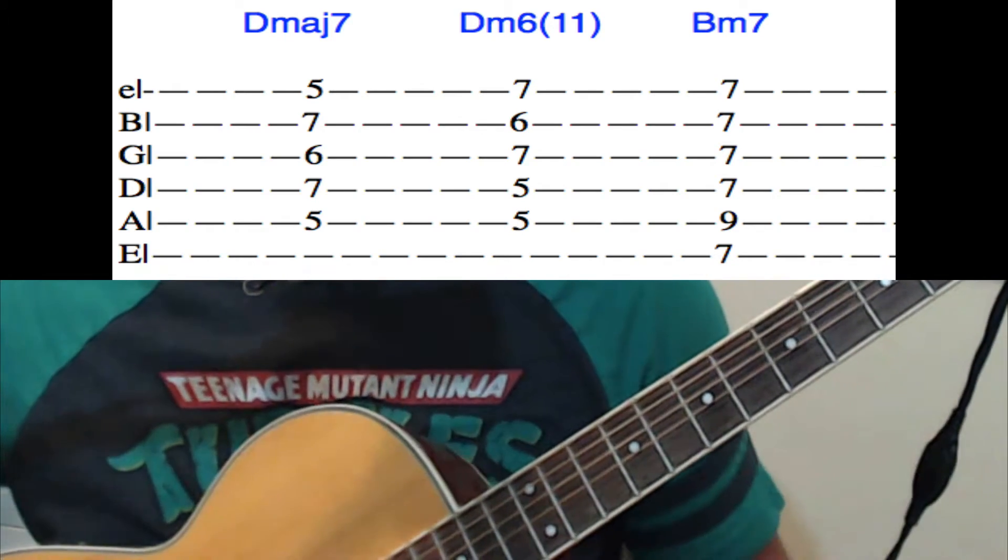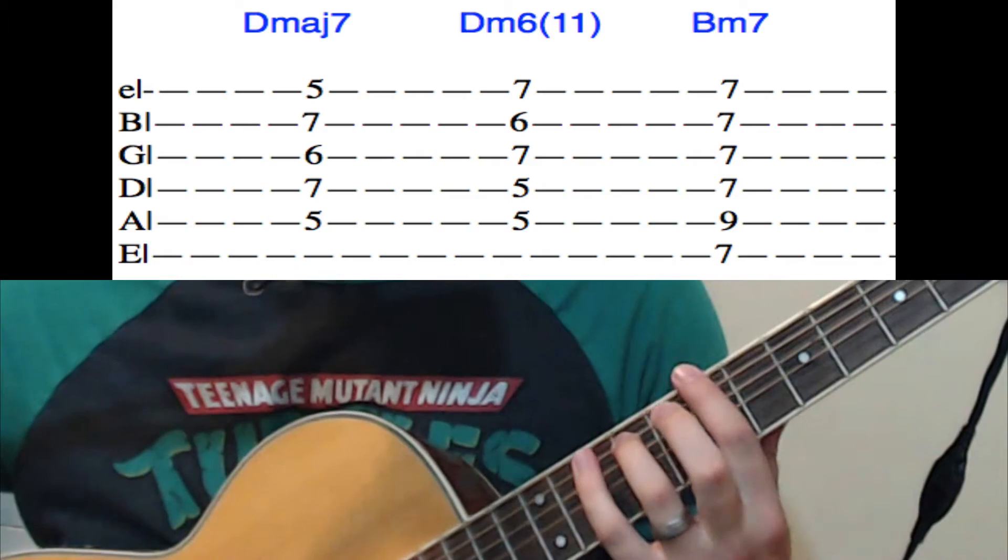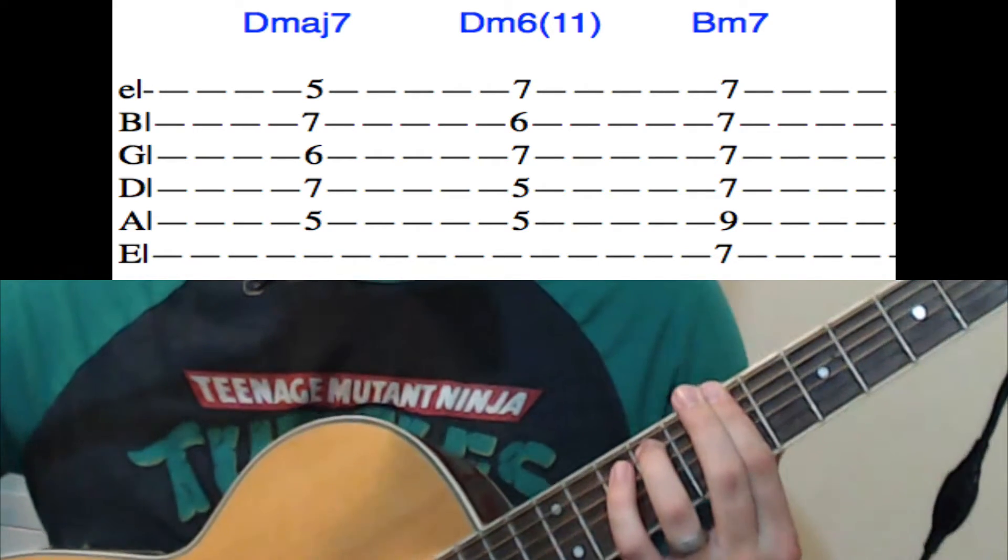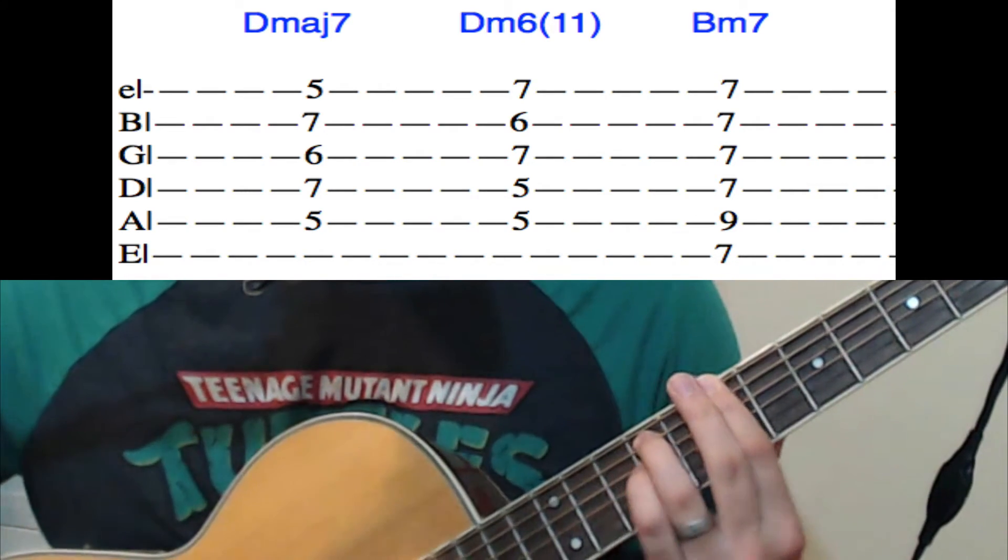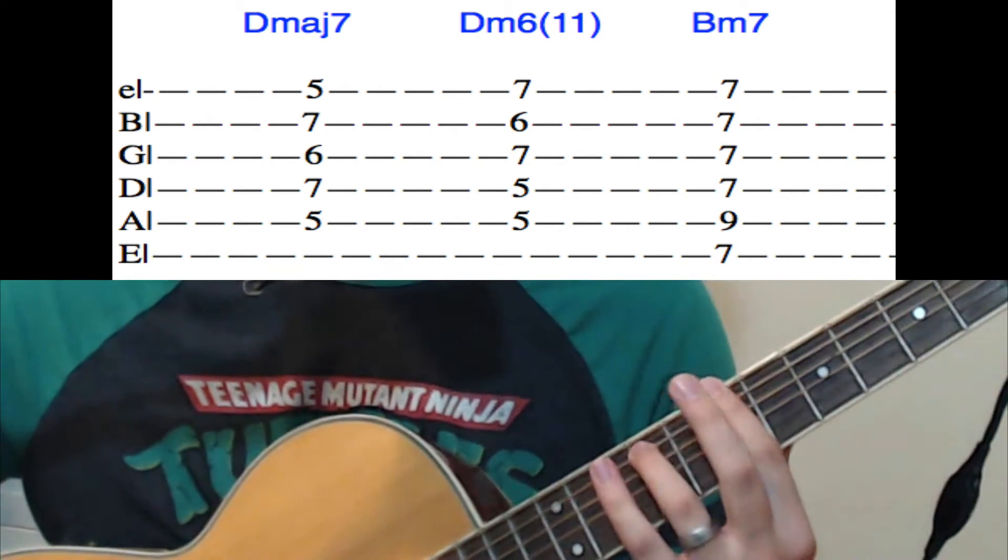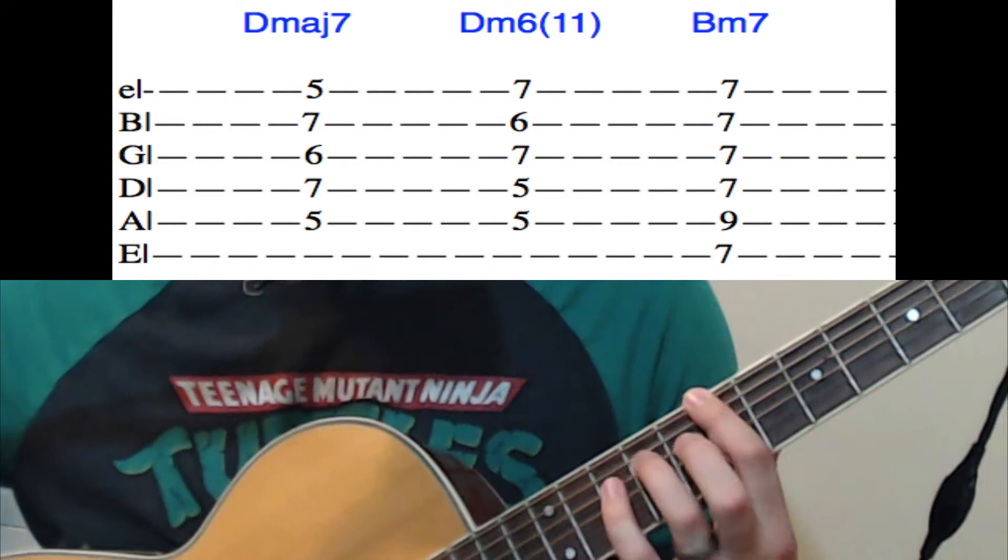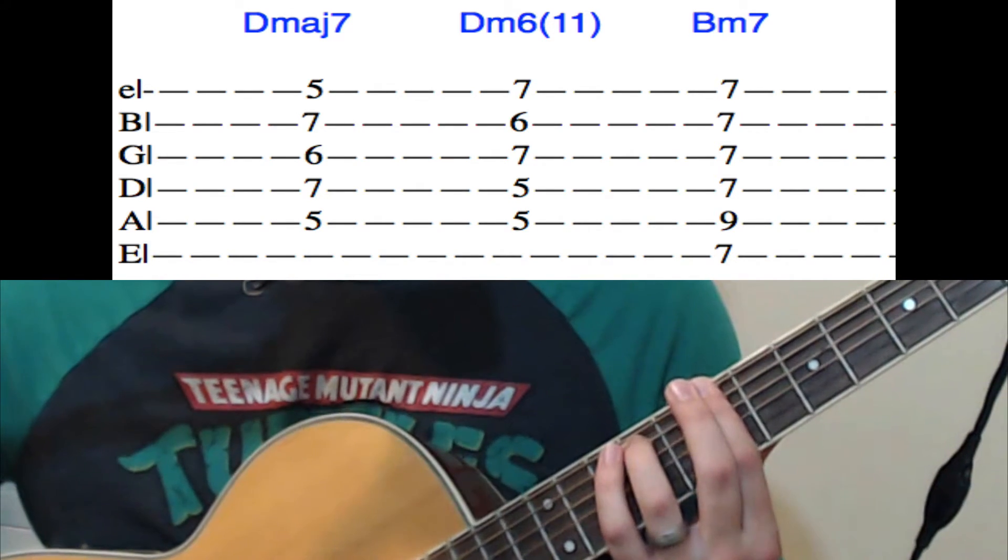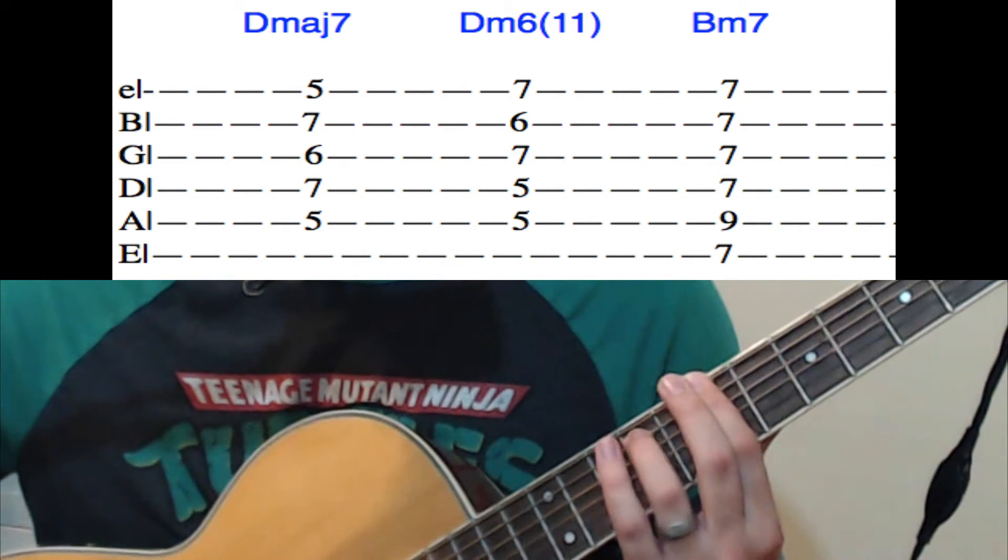Okay, and then that other chord that you could do instead of the Dm6 is a Bm. That's what I've been seeing a lot of people do that have covered this. They've been doing the Bm or the Bm7, and it can work. So those notes are gonna be 7, 9, 7, 9, and then all 7s: 7, 9, 10.